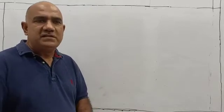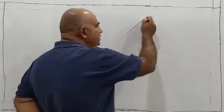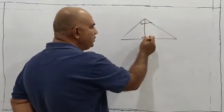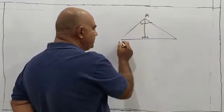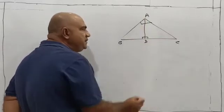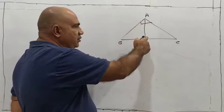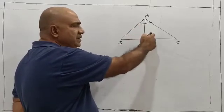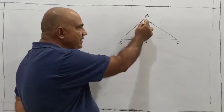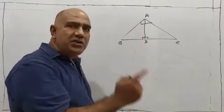The statement of the theorem goes like this — I don't have to write it because this is given in every book. The statement of the theorem is: from the right angle vertex of a right angle triangle, a perpendicular is drawn onto the hypotenuse. The triangles so formed on either side of the perpendicular are similar to each other and similar to the whole triangle.